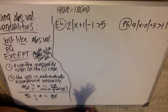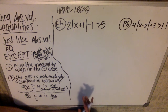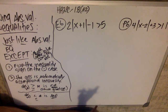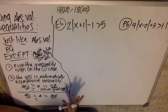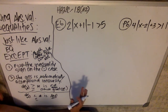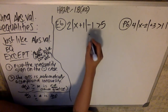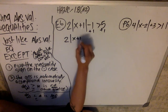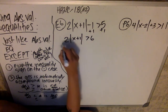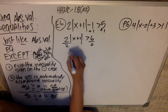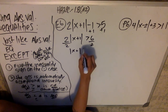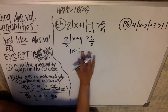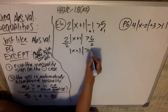In example six, I'm going to solve two times the absolute value of the quantity x plus one, all minus one, is greater than five. We're going to start by solving down to the absolute value. Adding one to both sides, I get two times the absolute value of x plus one is greater than six. Dividing both sides by two, I get the absolute value of x plus one is greater than three.